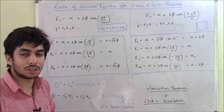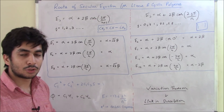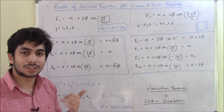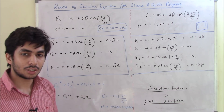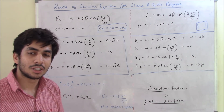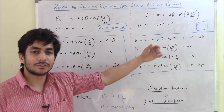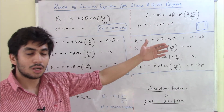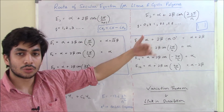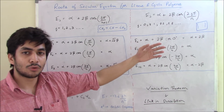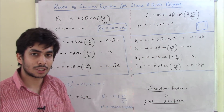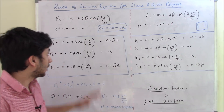For the allylic radical with three carbon atoms, there will be three energy levels. If there are four carbon atoms there will be four energy levels. For cyclic polyenes — cyclobutadiene has four carbon atoms so n = 4, and benzene has n = 6. That's how you determine n.